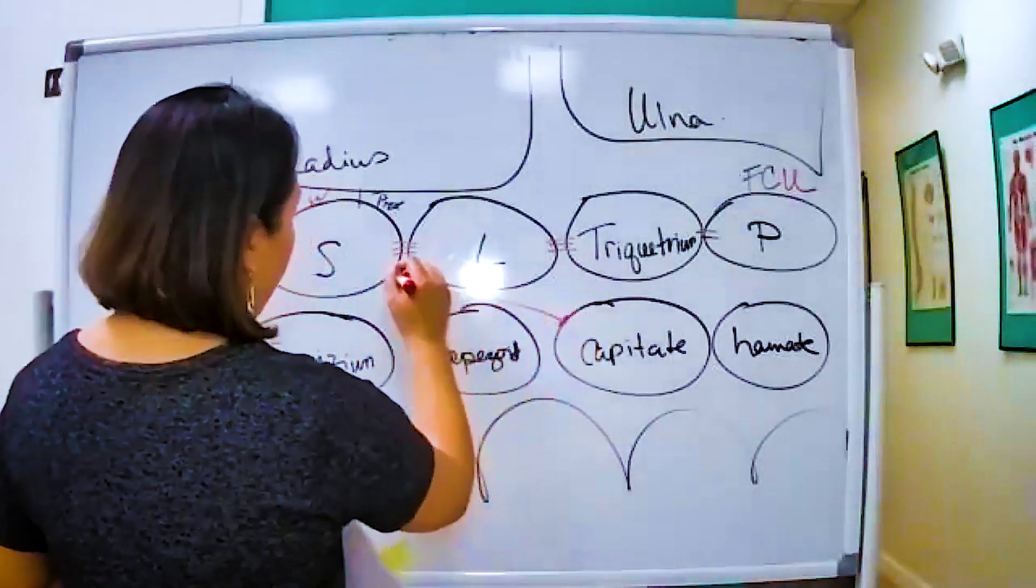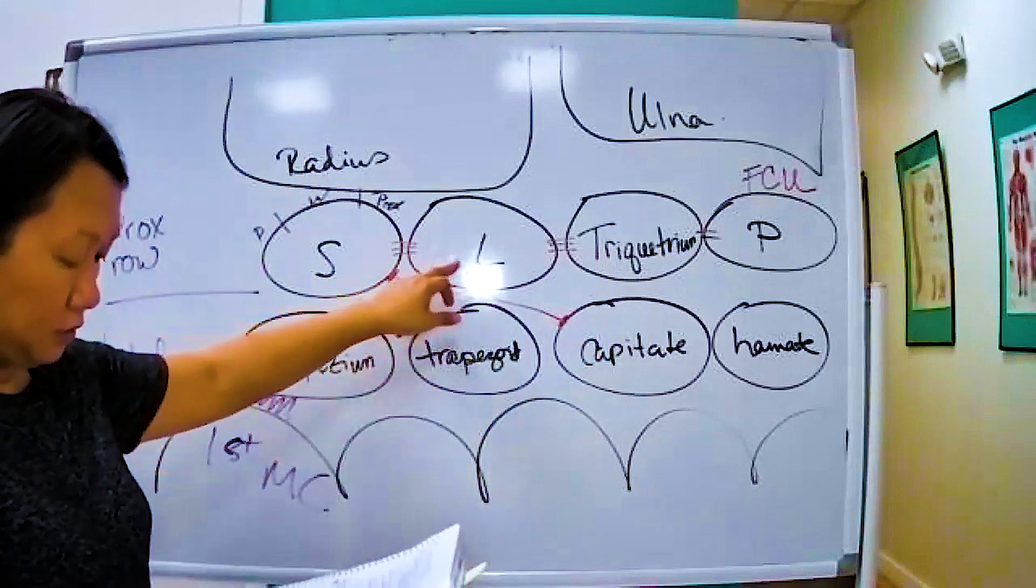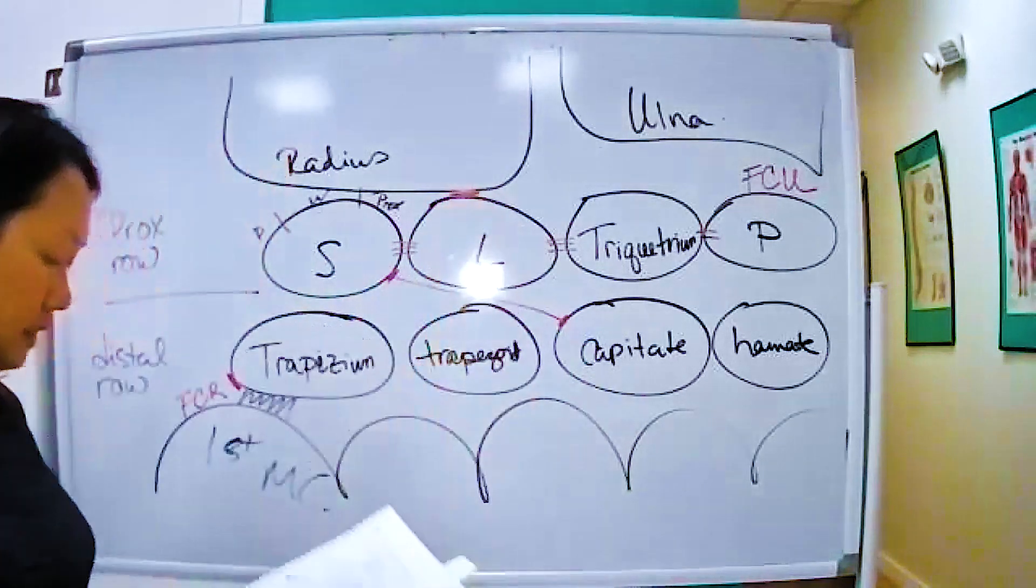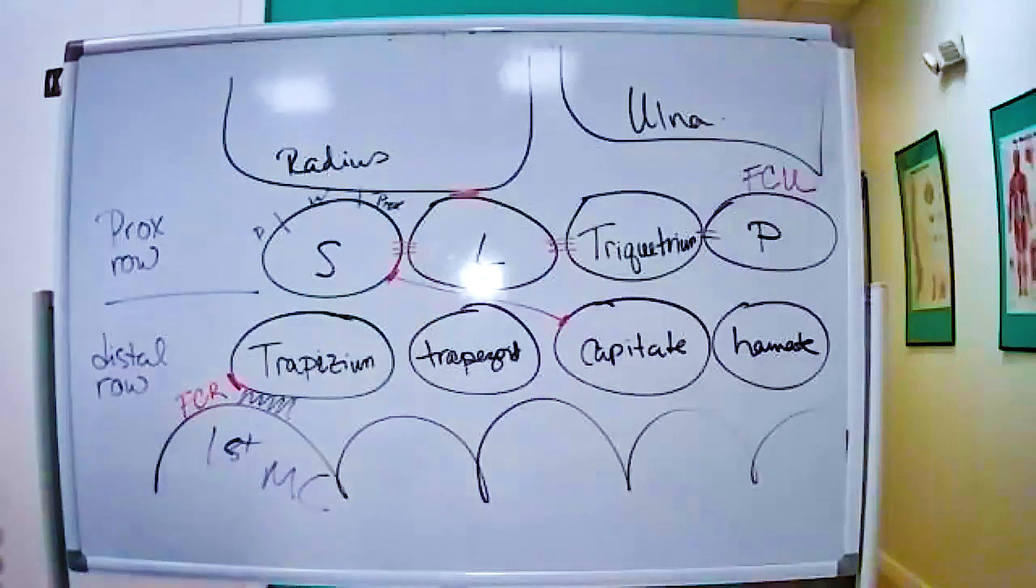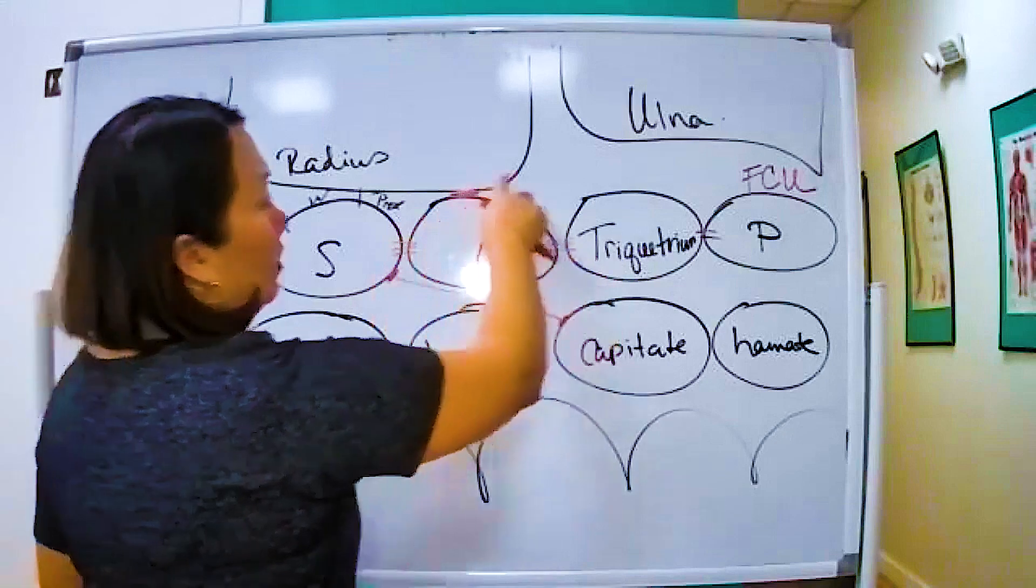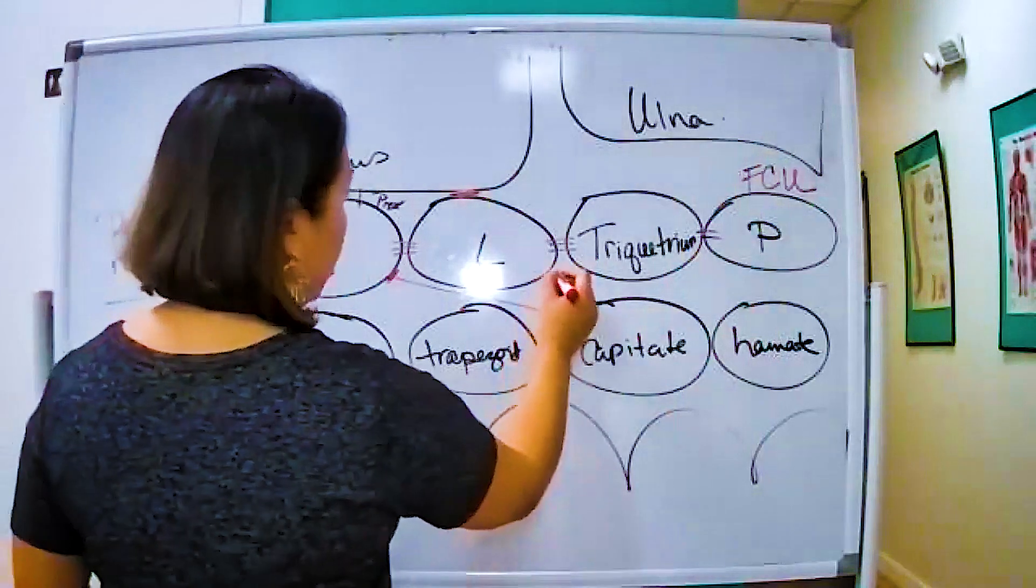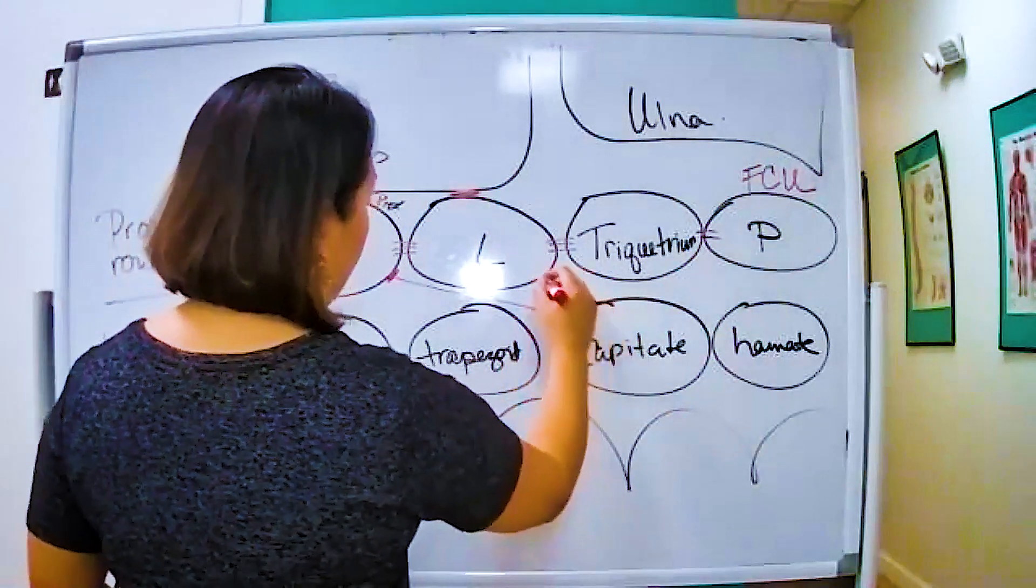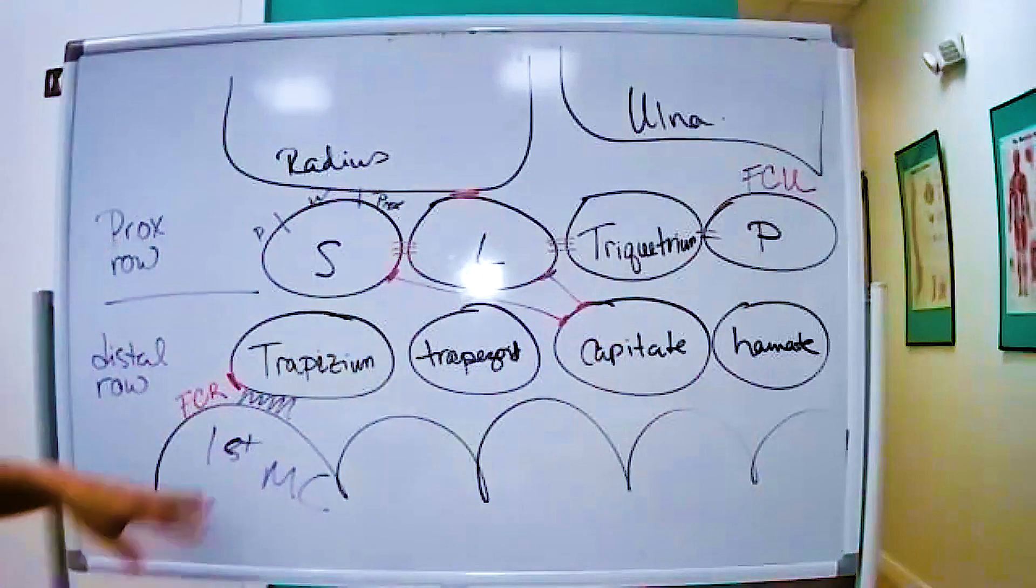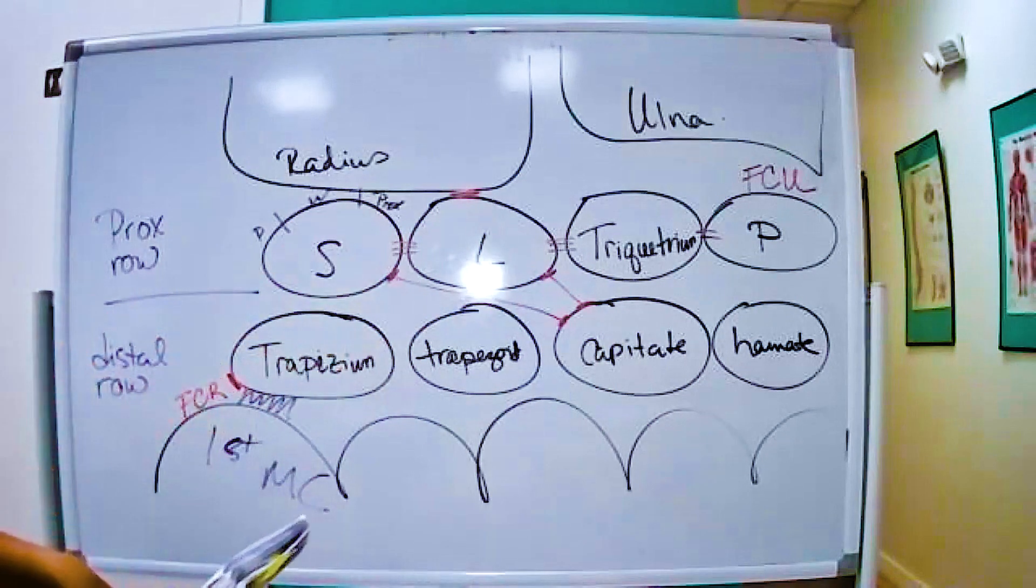Now the lunate, the lunate articulates with the radius. So it articulates with the radius and the TFCC and the triquetrum. So the lunate also articulates with the scaphoid, with the radius, with the triquetrum, and then of course the TFCC is like a big component and the capitate. So these two bones touch a lot of other bones. So anytime they touch a lot of bones, just understand that they're gonna cause a lot of problems.